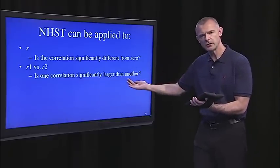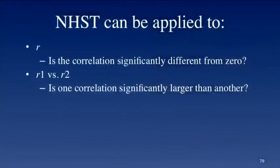So this can be applied to a correlational analysis. We could observe a correlation, calculate the p-value, and see if it's significantly different from zero. If so, that tells me that it's reliable. Okay? So there's a way to get at reliability. We could also apply it to comparing two correlations. So we could say is one correlation significantly larger than another.